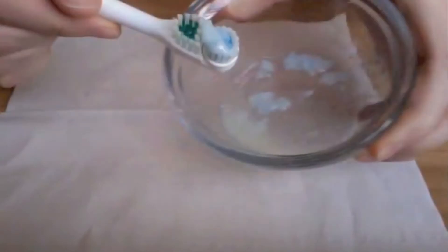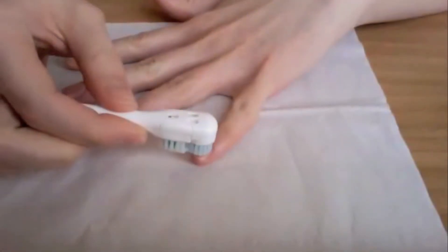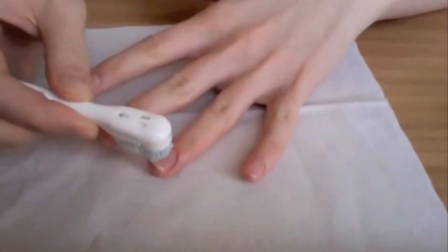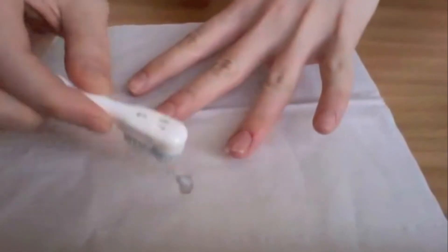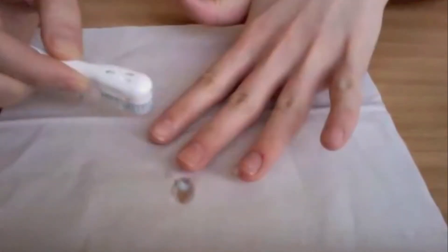Next, you want to use a toothbrush and take a bit of the mixture and scrub each nail individually. Do this carefully and try to spend a little bit of time on each nail.